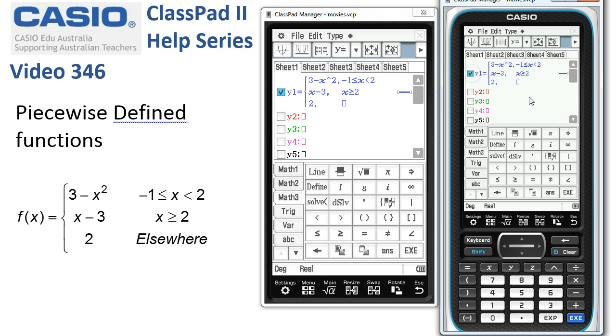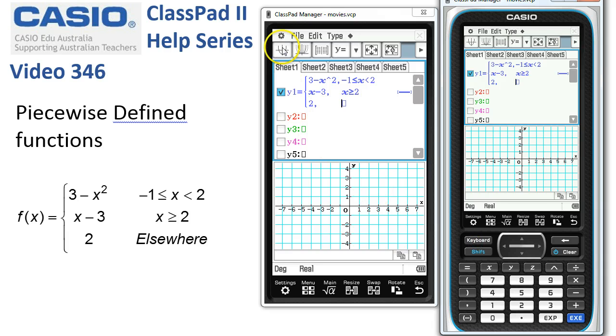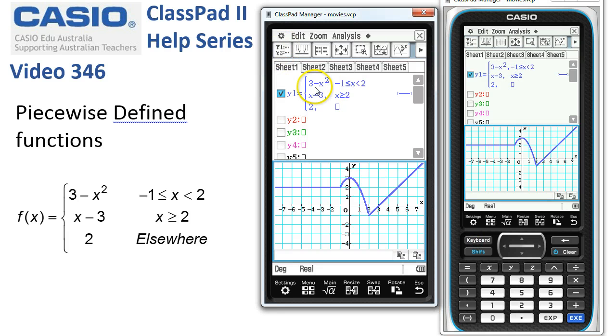Now we've just got to select the box to actually get the graph ready. And then we'll get rid of the keyboard and draw the graph. And so you can see ClassPad's drawn the three bits here.